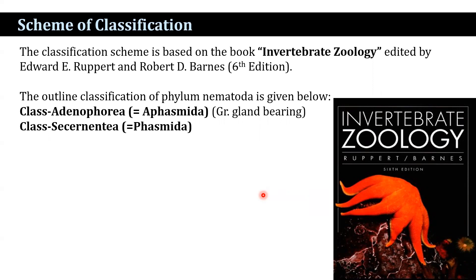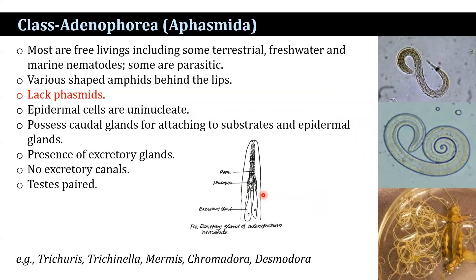The class Adenophoria contains nematodes that have various-shaped amphids behind the lips. Most species are free-living and some are parasitic. The free-living species include some terrestrial and freshwater forms and almost all marine forms. They have no phasmids. The epidermal cells are uninucleate. They possess caudal glands for attaching to substrates, and epidermal glands. They have excretory glands but no excretory canals. The testes are paired. Examples include Trichuris trichiura and Mermis.